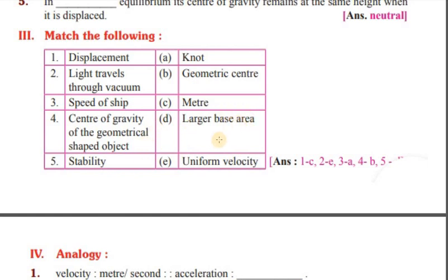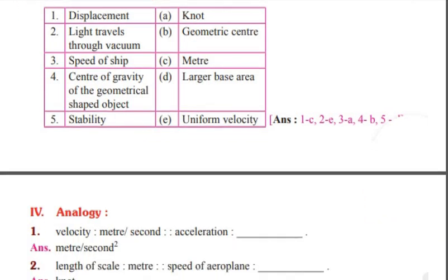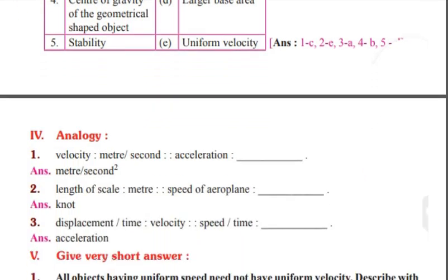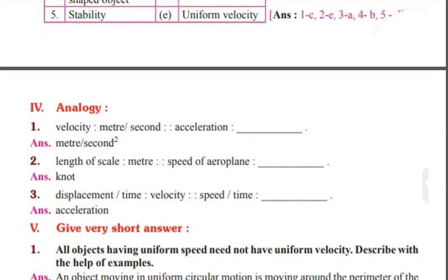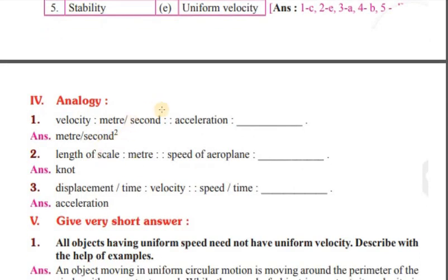When the base is larger, stability is larger — a larger base area gives greater stability. For the analogy: velocity is measured in meters per second, and acceleration is measured in meters per second squared.